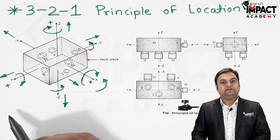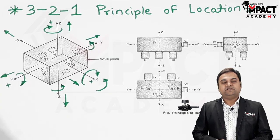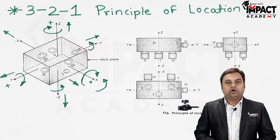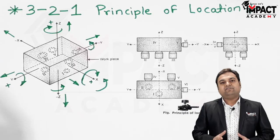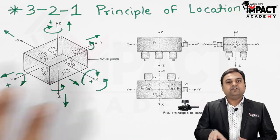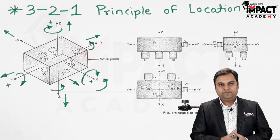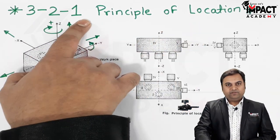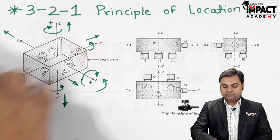When we add up all these degrees of freedom the total comes out to be 12. A free body kept in space has 12 degrees of freedom. This body can be considered the workpiece on which we have to perform a machining operation, so we have to restrict all 12 degrees of freedom. To do this, we use the 3-2-1 principle of location, which uses 3 pins, 2 pins, and 1 pin — also called rest pins, support pins, or pads.